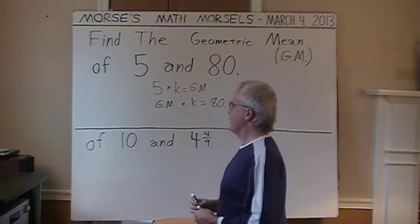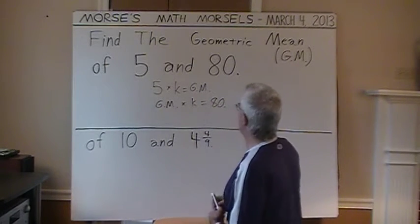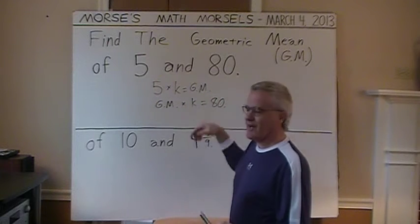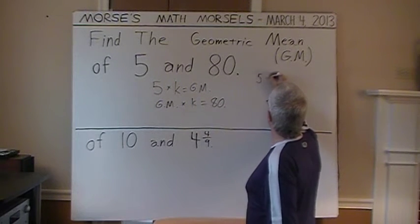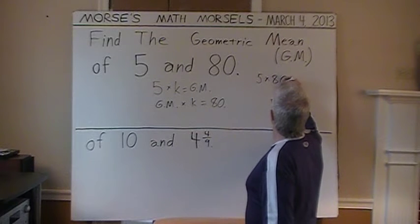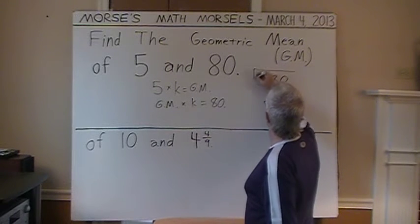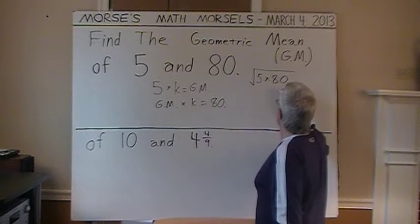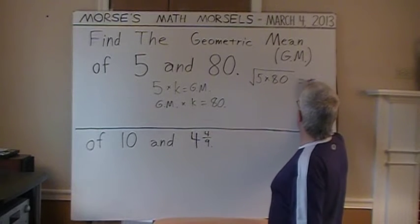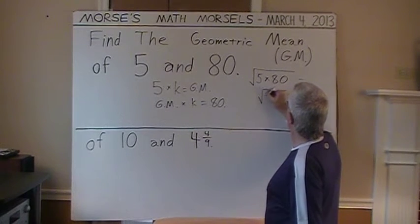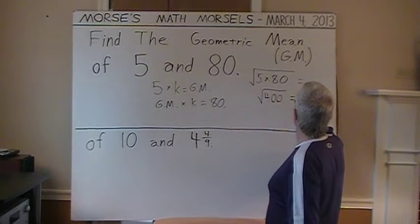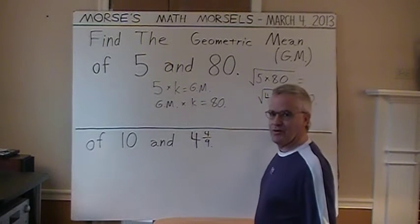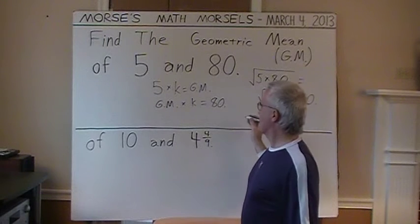There are a few ways to do this. One of them is, merely multiply the first and the last numbers, 5 times 80, and take the square root of that product. 5 times 80 gives 400, and the square root of 400 is 20. I'm claiming that 20 is a geometric mean.